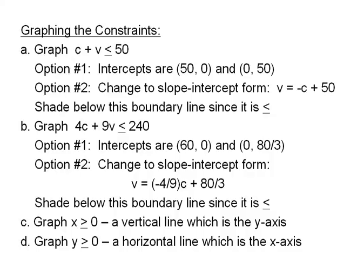Our first constraint was that C plus V needs to be less than or equal to 50. The first option for graphing this would just to be let C equal 0 and V equal 0 to find the two intercepts. Those are 50 with 0 and 0 with 50. The other option would be to change this into slope intercept form, which comes out to be V equals negative C plus 50. As we test points or consider this inequality, realize we need to shade below this boundary line to find what is a solution.